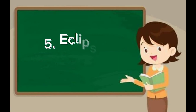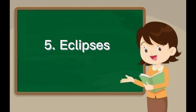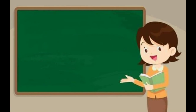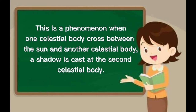Number 5: Eclipses. An eclipse is a phenomenon when one celestial body crosses between the sun and another celestial body, and a shadow is cast on the second celestial body.